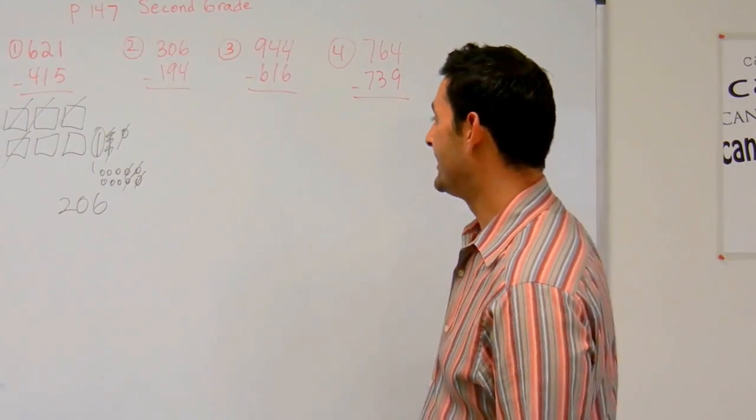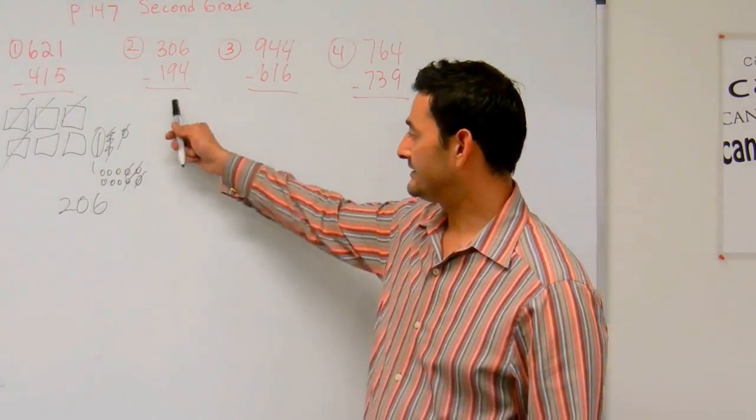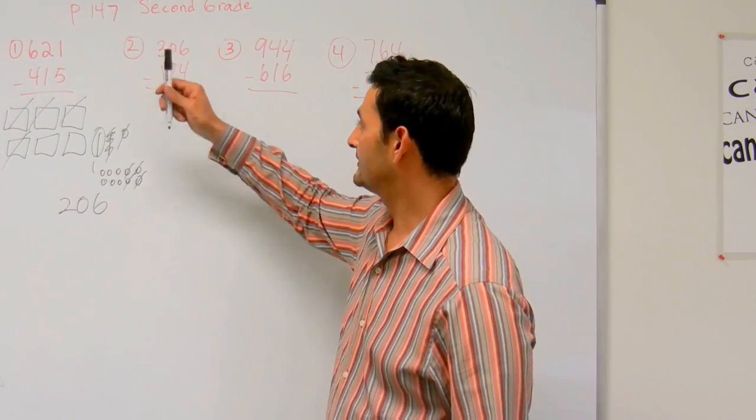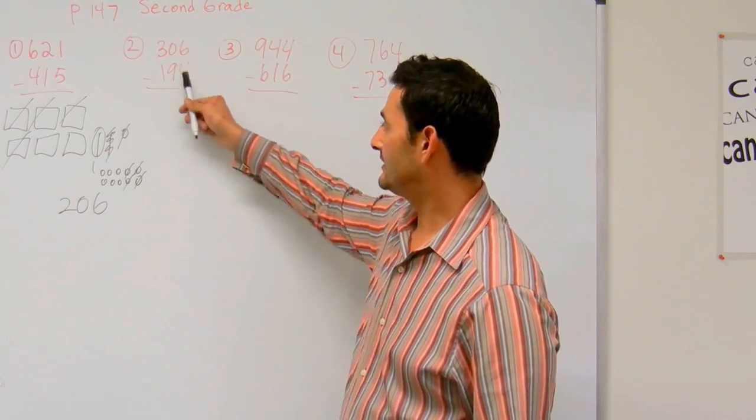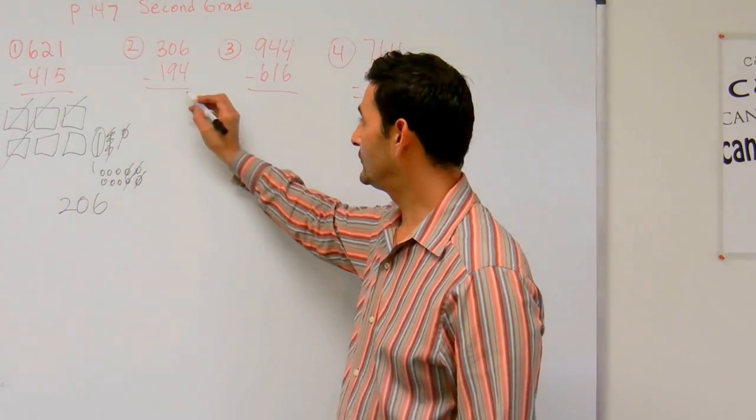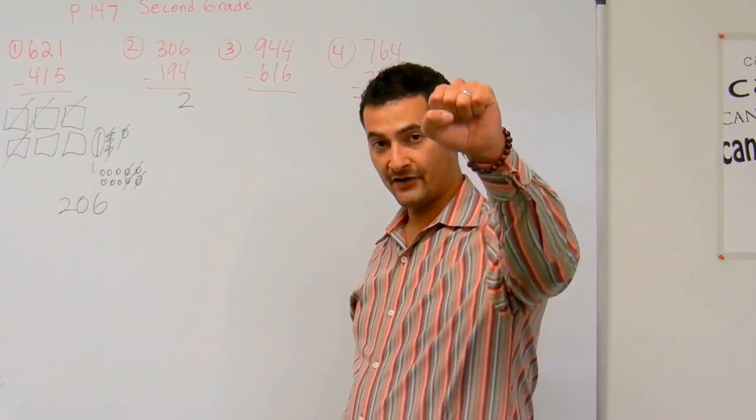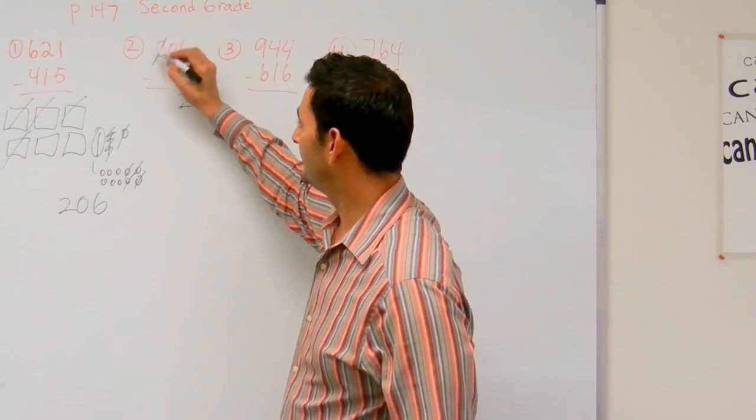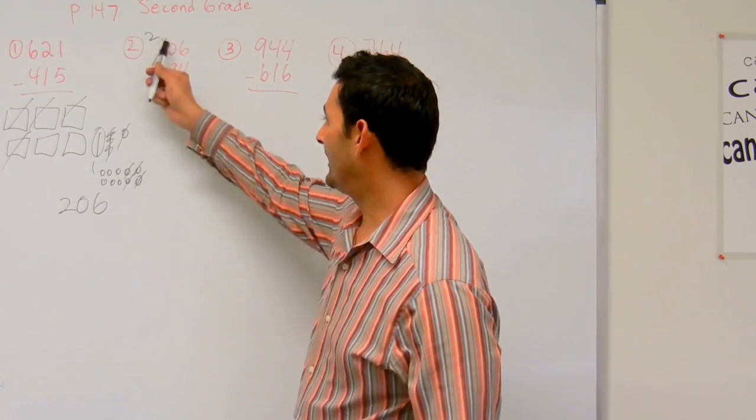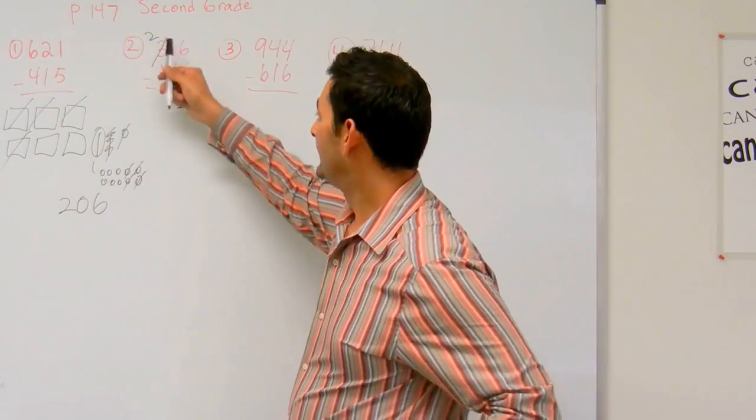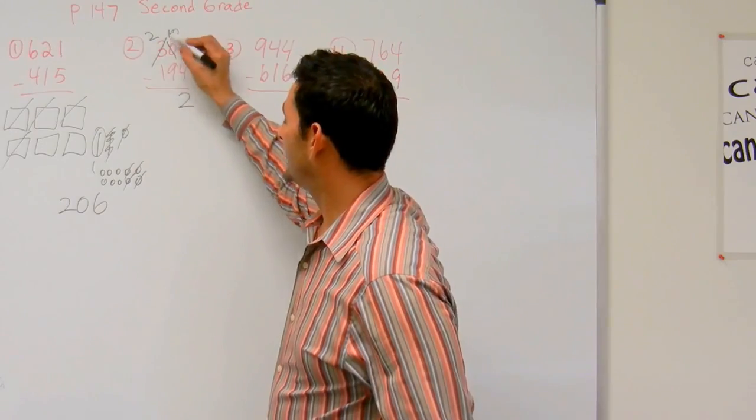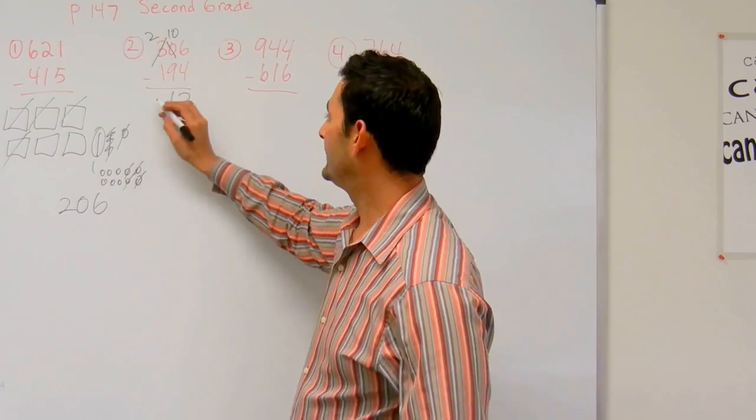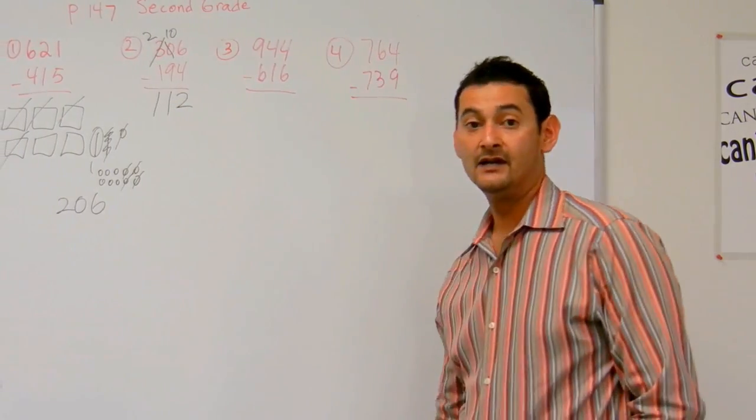Now let's take a look at number 2. What I'm going to do is subtract the 1's place, then the 10's place, then the 100's place. 6 take away 4 is 2. If I have 0, can I take away 9? Absolutely not. I'm going to have to borrow from the 100's place. I'm going to borrow 1, so 3 becomes 2, and then this 0 is going to become a 10. So now I have 10 take away 9, that's 1. 2 take away 1 is 1. The answer is 112.